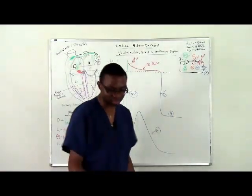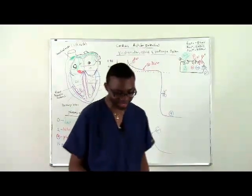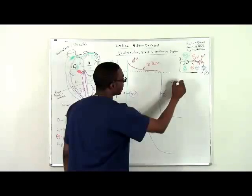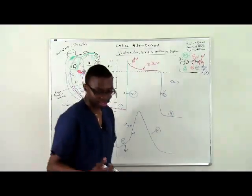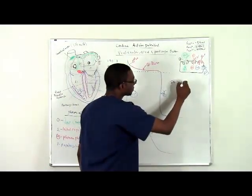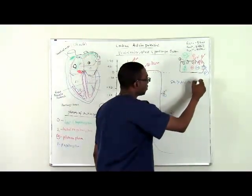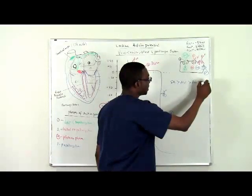So the SA node depolarizes faster than the AV node, which depolarizes faster than the His bundle, which depolarizes faster than the Purkinje fibers.